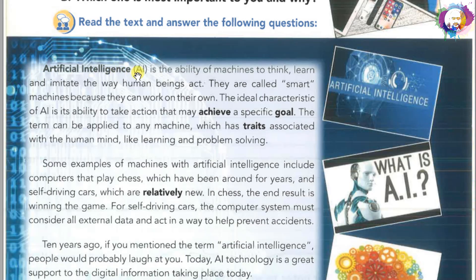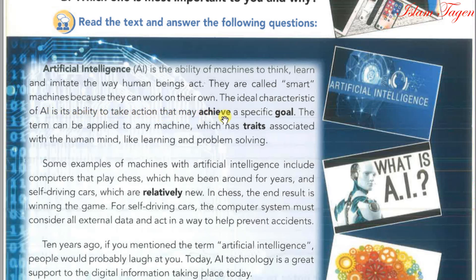Artificial Intelligence, AI, is the ability of machines to think, learn, and imitate the way human beings act. They are called smart machines because they can work on their own. The ideal characteristic of AI is its ability to take action that may achieve a specific goal. The term can be applied to any machine which has traits associated with the human mind, like learning and problem solving.